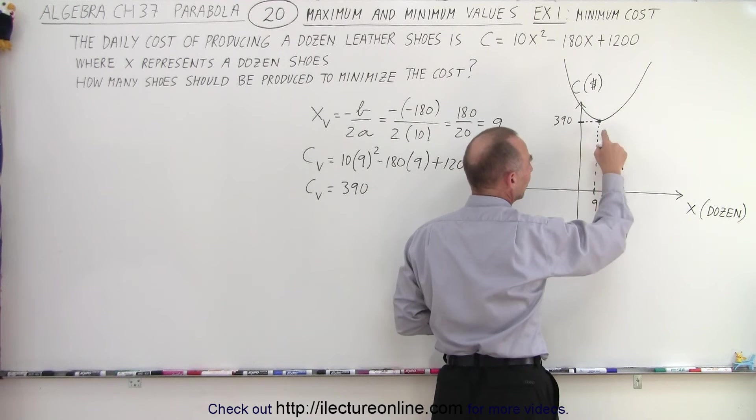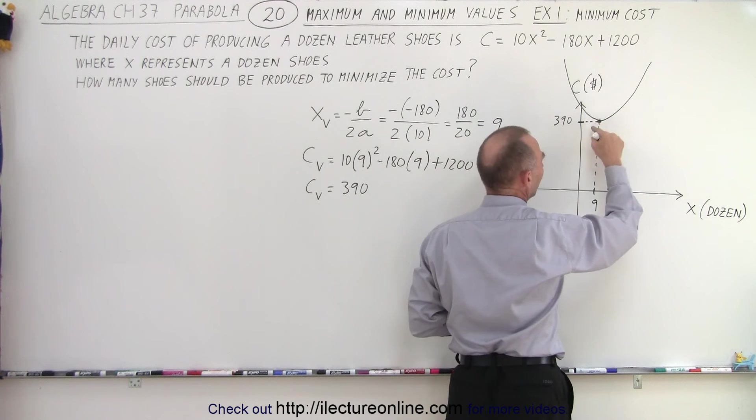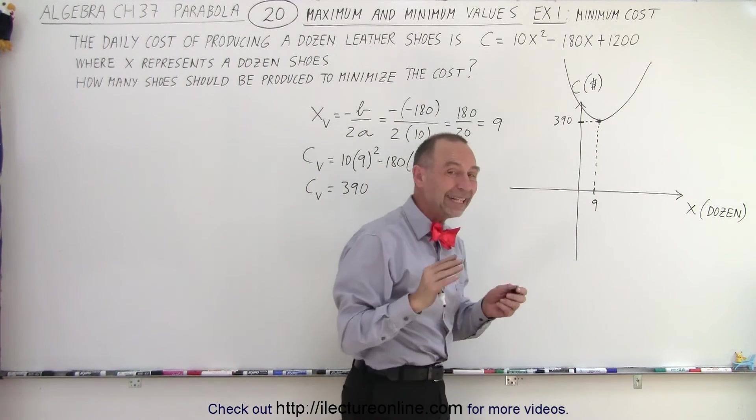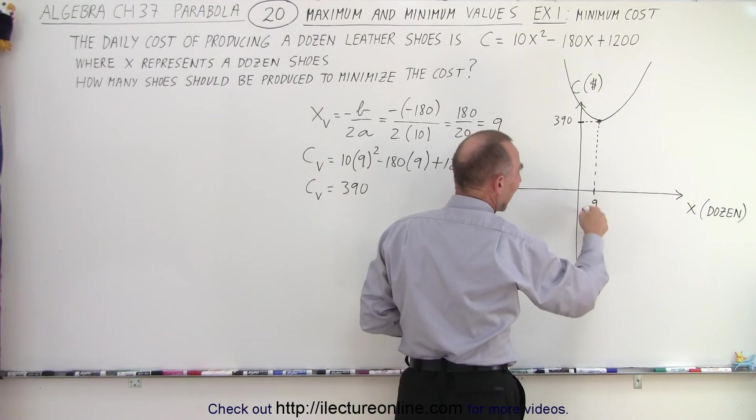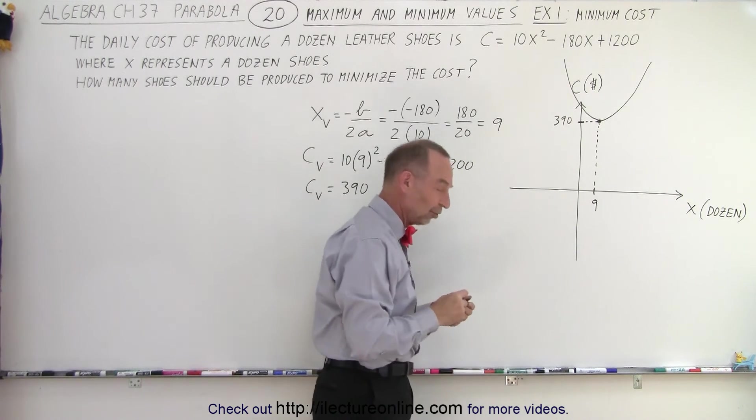When x equals 9, when x becomes bigger, the cost goes up. When x is smaller, the cost goes up as well. So, the least amount of cost is encountered when we produce 9 dozen of shoes a day.